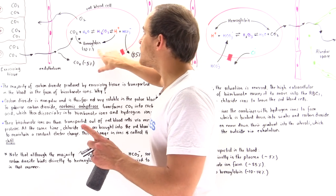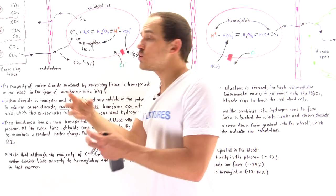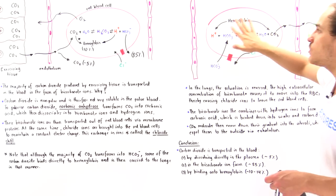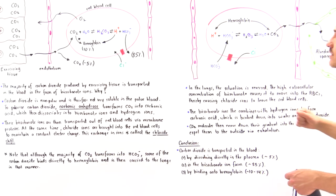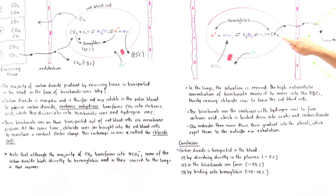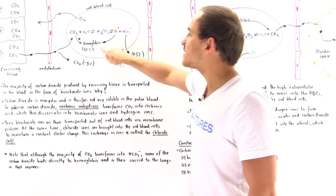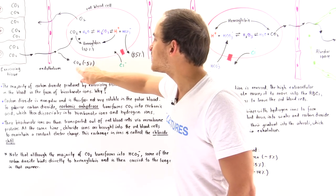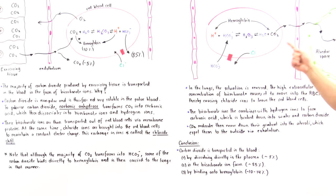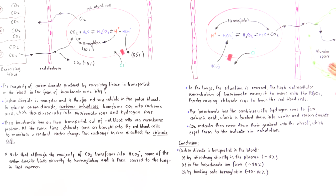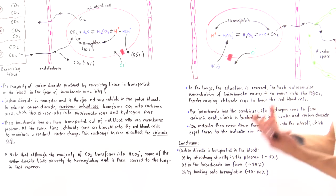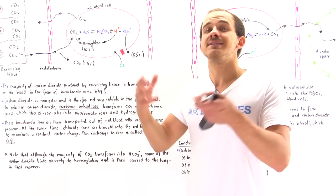Additionally, about 10% of the carbon dioxide that was held by hemoglobin is also released inside the red blood cells in the lungs. Together, the 10% released by hemoglobin, the 85% that was held as bicarbonate, and the 5% dissolved in blood plasma all leave the red blood cell and enter the alveolar space, where exhalation expels all that carbon dioxide into the outside environment.